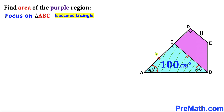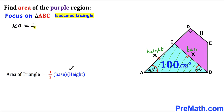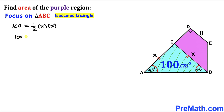Now let's find the side lengths of triangle ABC. Since the two equal side lengths are the base and height, let's call each one X. Using the area of a triangle formula — area equals one half times base times height — we have: 100 equals one half times X times X, which simplifies to 100 equals X squared divided by 2.